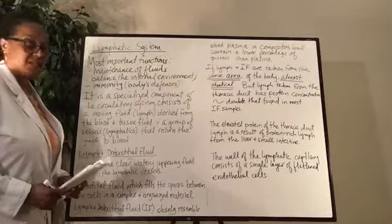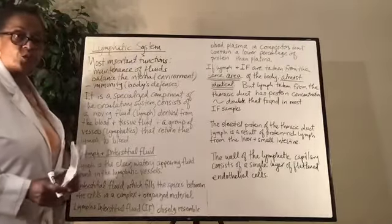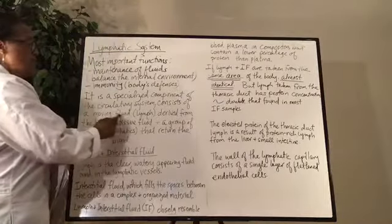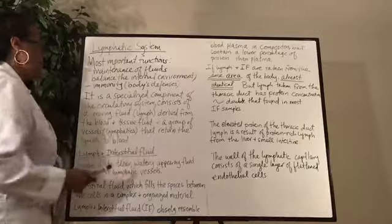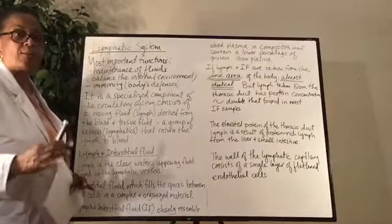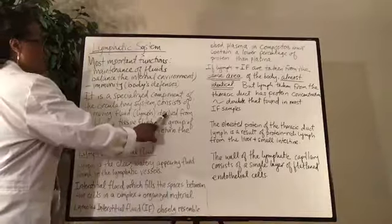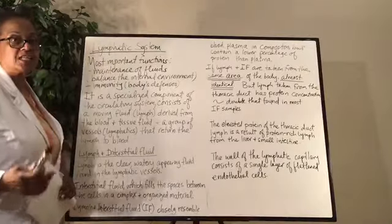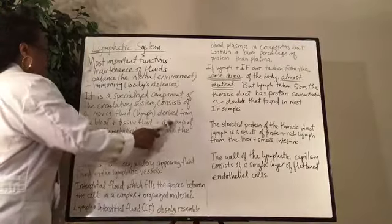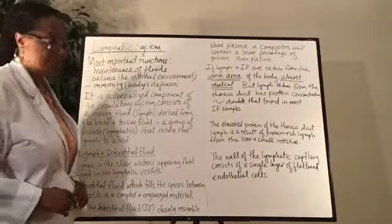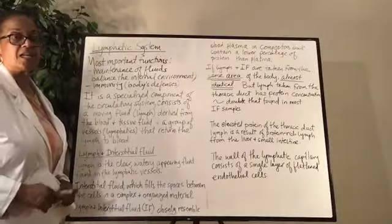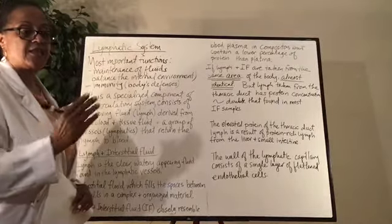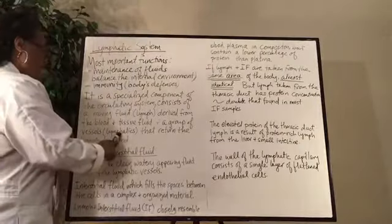The lymphatic system is a specialized component of the circulatory system. It consists of moving fluid known as lymph. The fluid is derived from blood and tissue fluid — that's where lymph comes from. It is not blood, but it does come from blood and tissue fluid. There is a group of vessels called lymphatics that return the lymph to the blood. The fluid is lymph and the vessels that lymph flows through are called lymphatics.